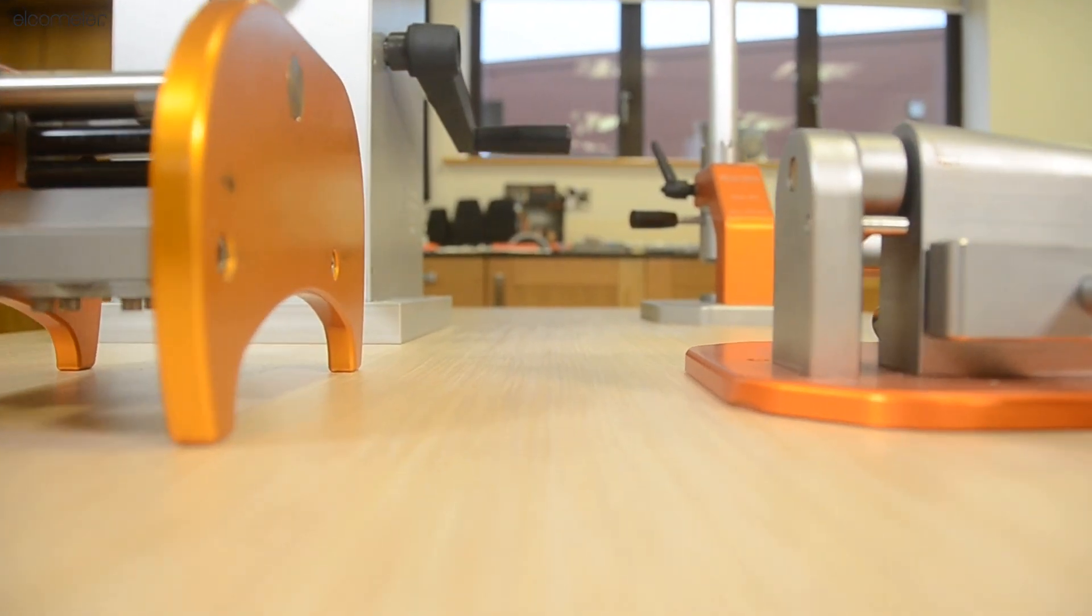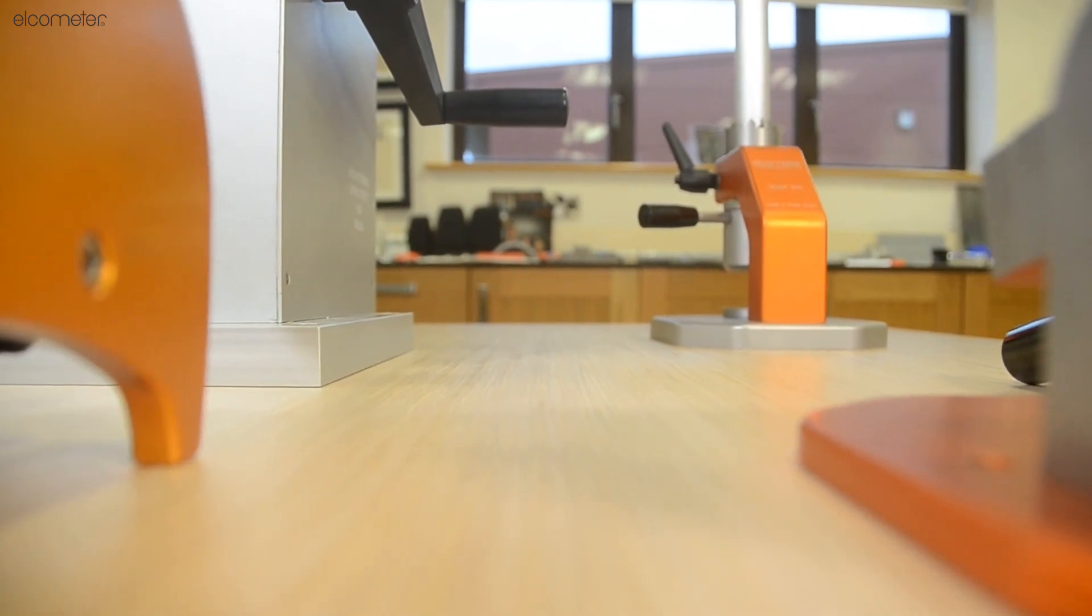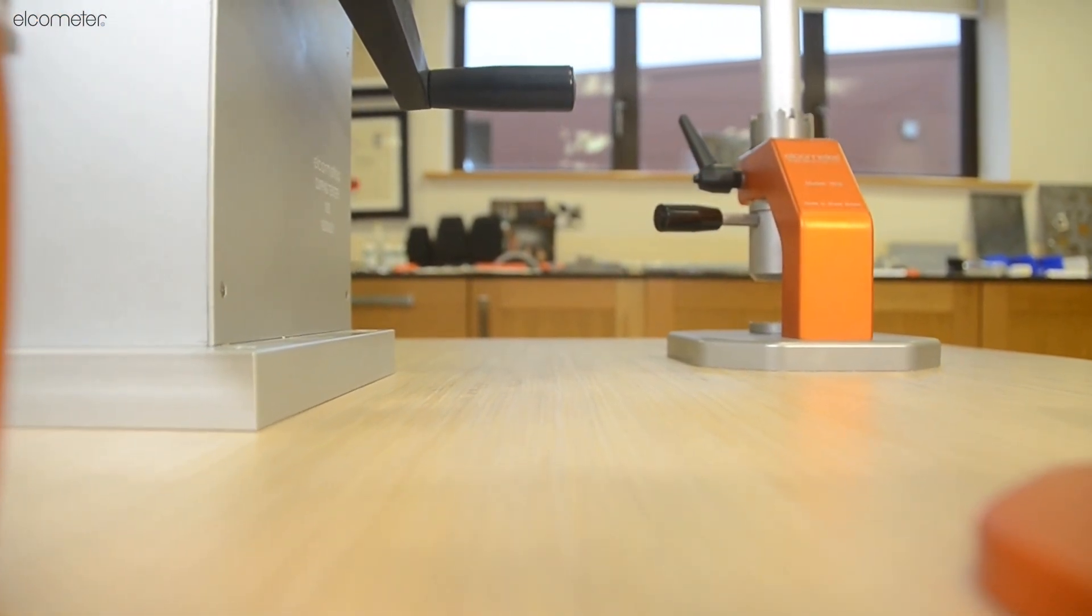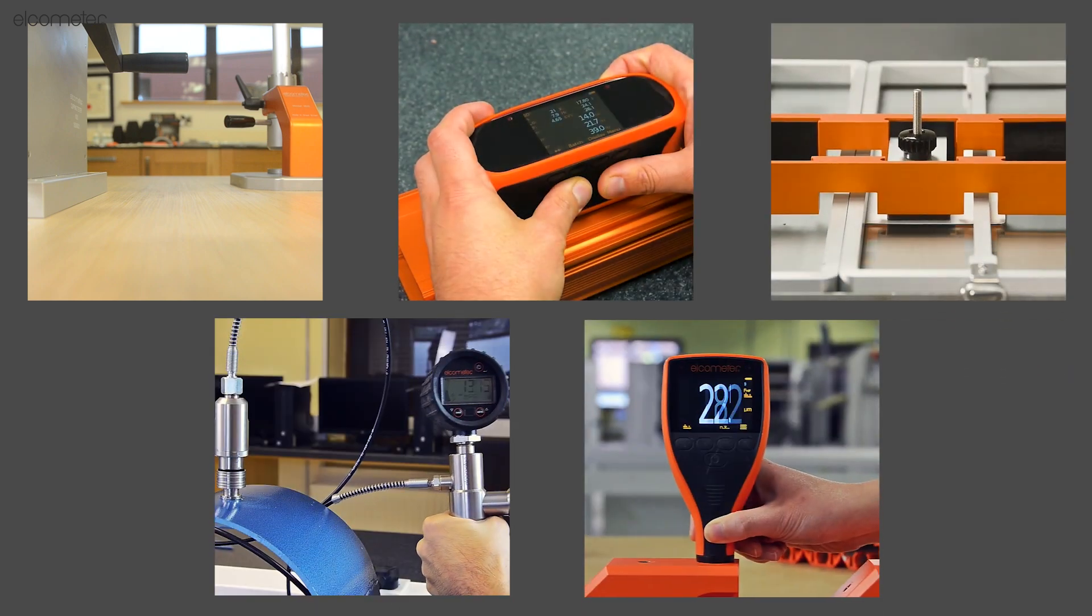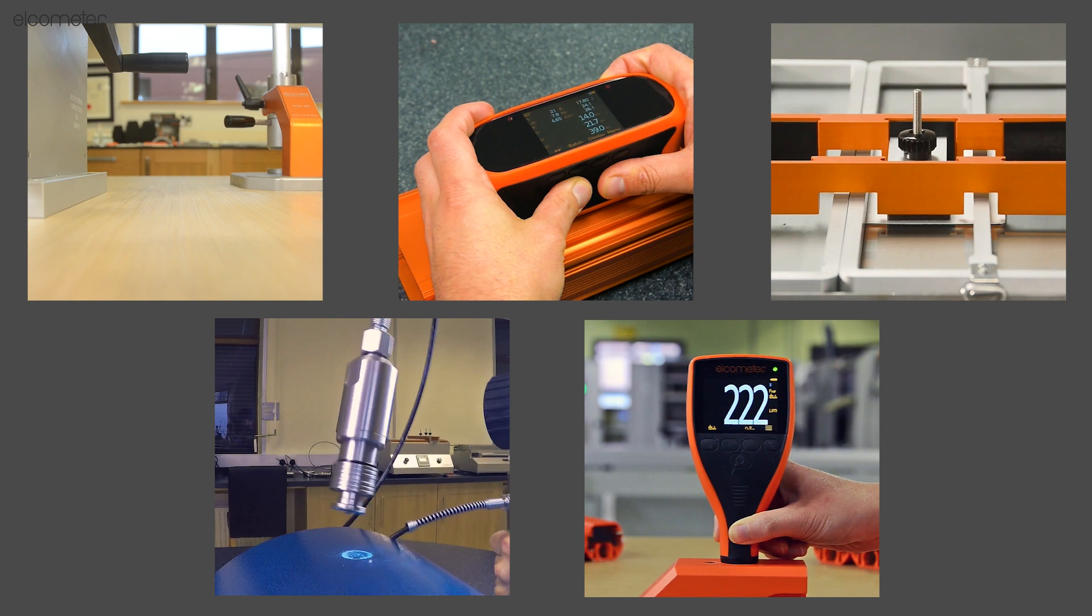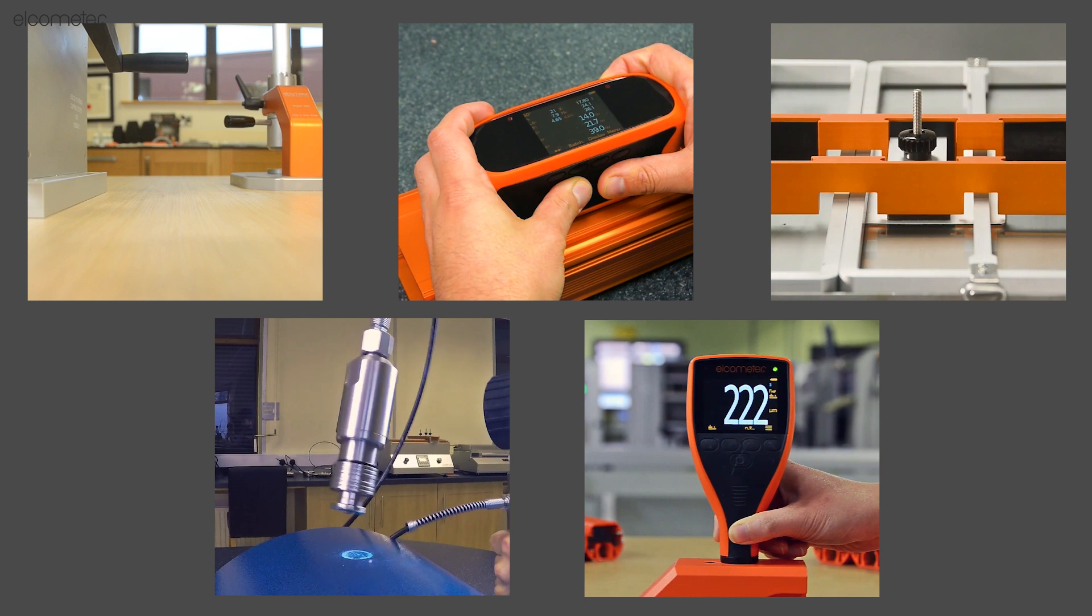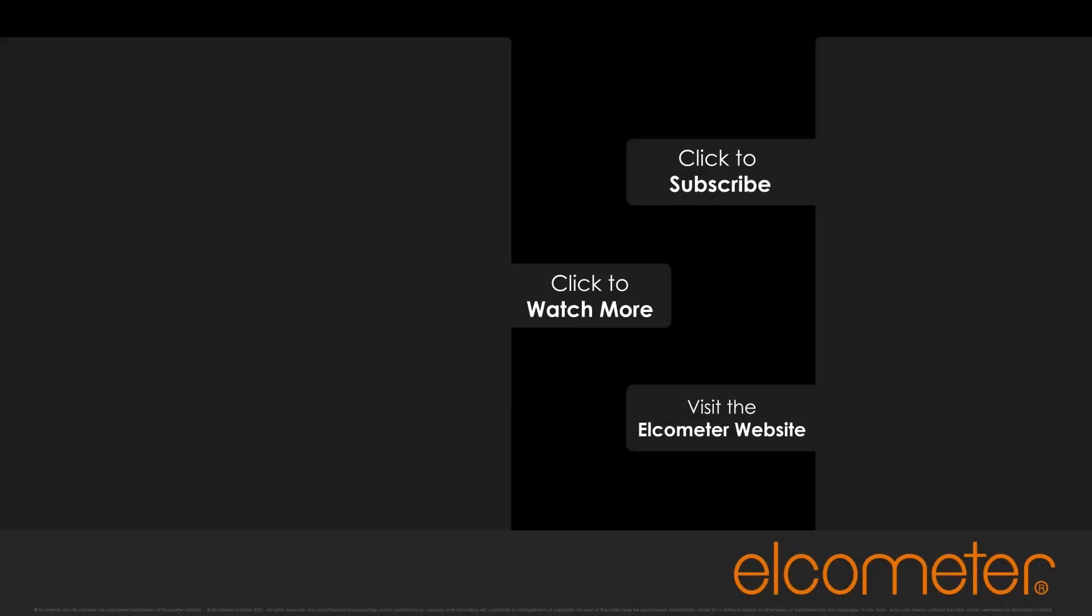Elcometer's range of physical test equipment spans more than just physical impact and deformation. Other tests such as gloss, abrasion, adhesion and dry film thickness are just as vital for assessing the performance of a coating.